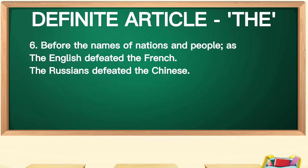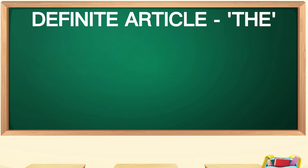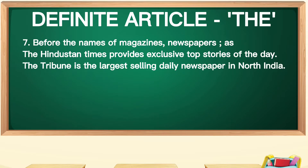The sixth point: the is used before the names of nations and people. For example: 'The English defeated the French.' 'The Russians defeated the Chinese.' The seventh point: the is used before the names of magazines and newspapers. For example: 'The Hindustan Times provides exclusive top stories of the day.' 'The Tribune is the largest selling daily newspaper in North India.'